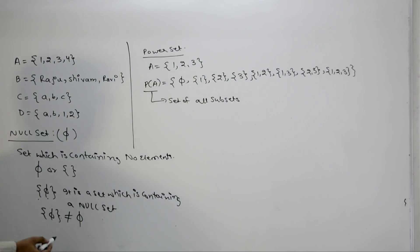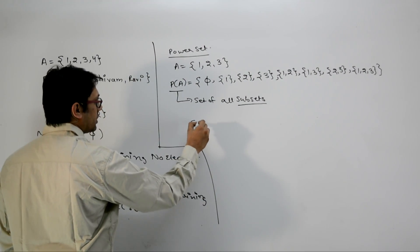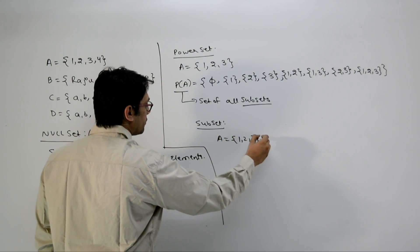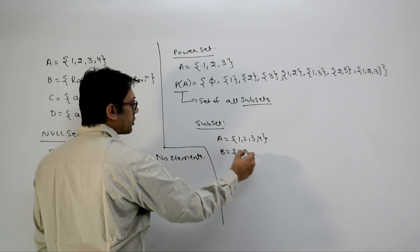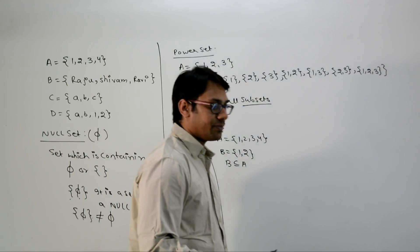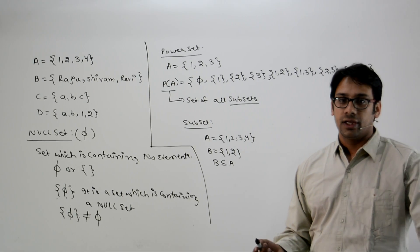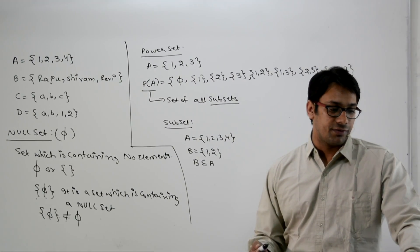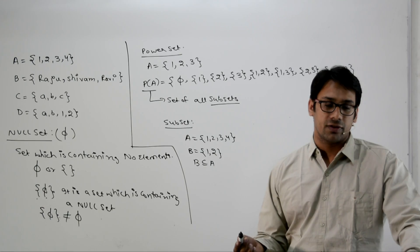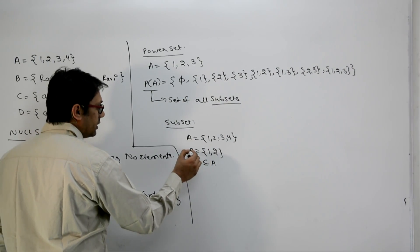Now, what is a subset? If there is a set A containing 1, 2, 3, 4 and a set B containing 1, 2, then B is a subset of A. Formally, if every element of a set B is also an element of a set A, then B is called a subset of A.